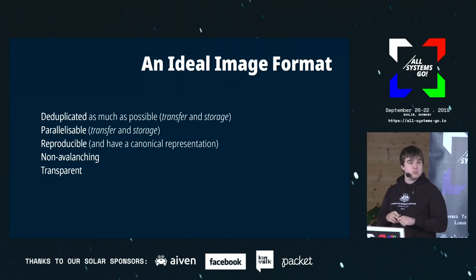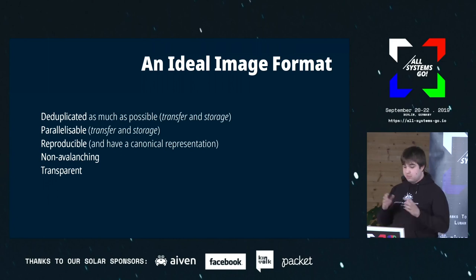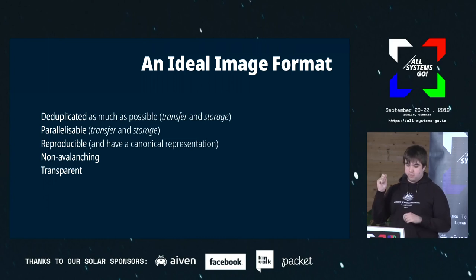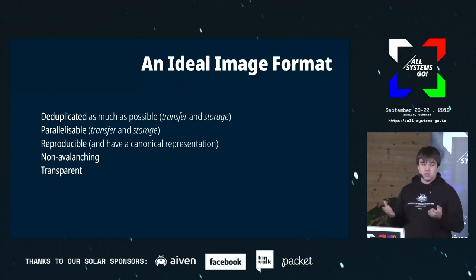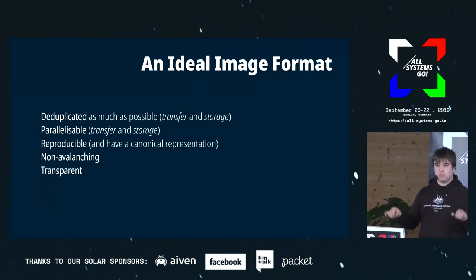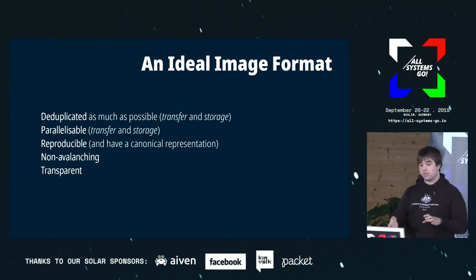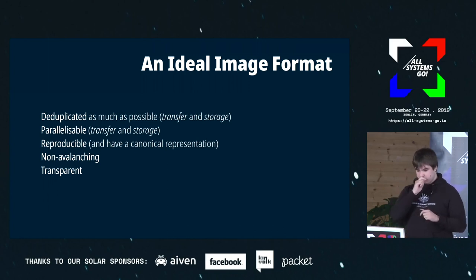You want it to be parallelizable — the ability to both download many different things at the same time and extract or represent them on the file system in parallel. You want it to be reproducible, because if you have two different tools that build the same or a very similar image, you want the deduplication to work between them even though they've never seen each other.